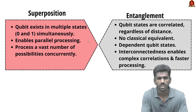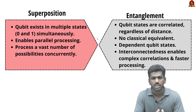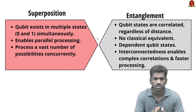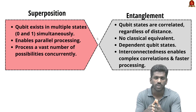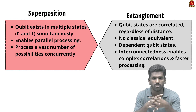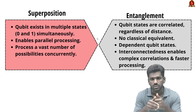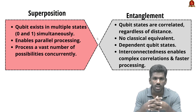Qubits also have the property of entanglement, meaning two particles can influence each other no matter how far apart they are. The state of one qubit is directly related to the state of another qubit regardless of the distance separating them. Even if placed at opposite ends of the universe, they still influence each other — a property with no classical counterpart.